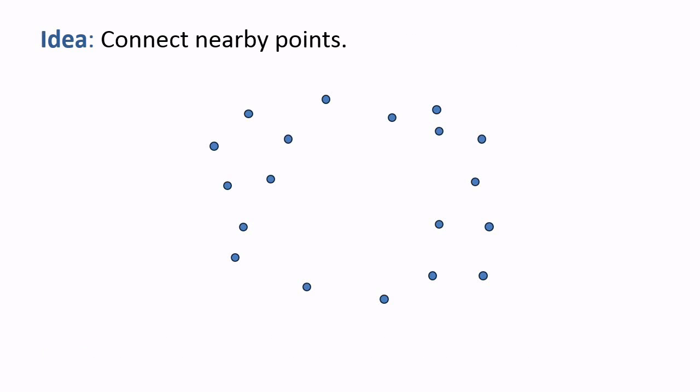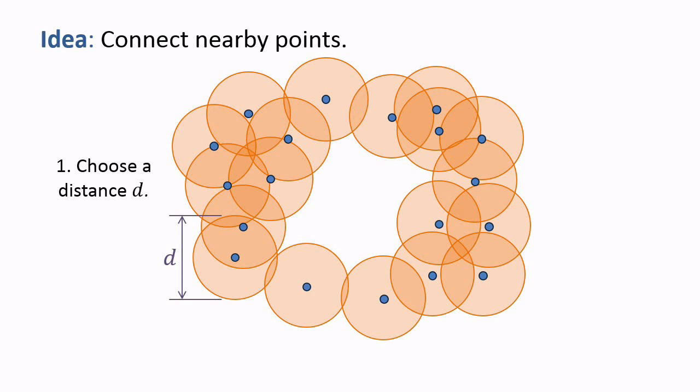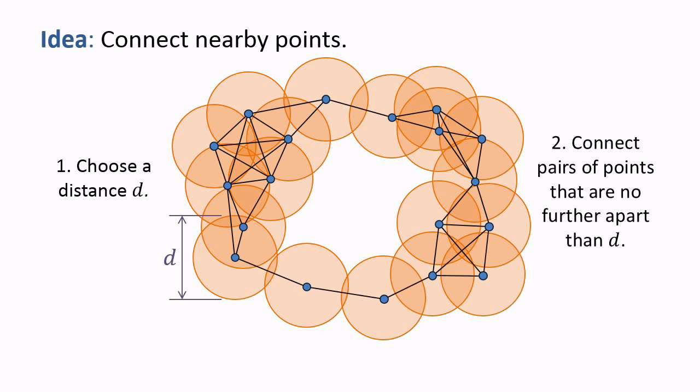One idea is to connect nearby points. We first choose a distance, or scale parameter, d. We draw a ball of diameter d around each point. Two balls intersect exactly when two points are no further apart than distance d, in which case we connect the two points with an edge. This creates a graph whose vertices are the original points.